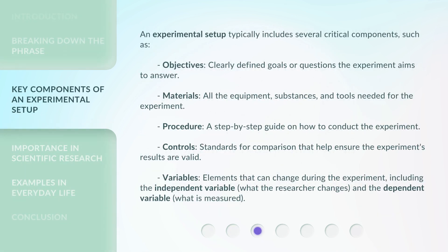An experimental setup typically includes several critical components, such as objectives — clearly defined goals or questions the experiment aims to answer — materials, meaning all the equipment, substances, and tools needed for the experiment, and procedure, a step-by-step guide on how to conduct the experiment.